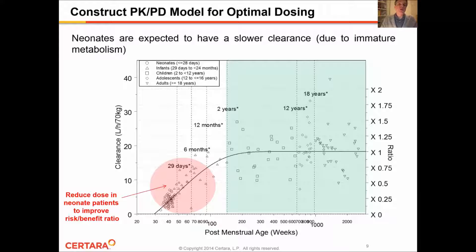The population PKPD model provided that neonates are expected to have a slower clearance, basically due to immature metabolism in this very young patient population. What this provided is that a dose reduction should be performed in the younger pediatrics group to avoid overdosing the patients. By reducing the dosing, we were able to maintain drug exposure similar to those observed in adults.